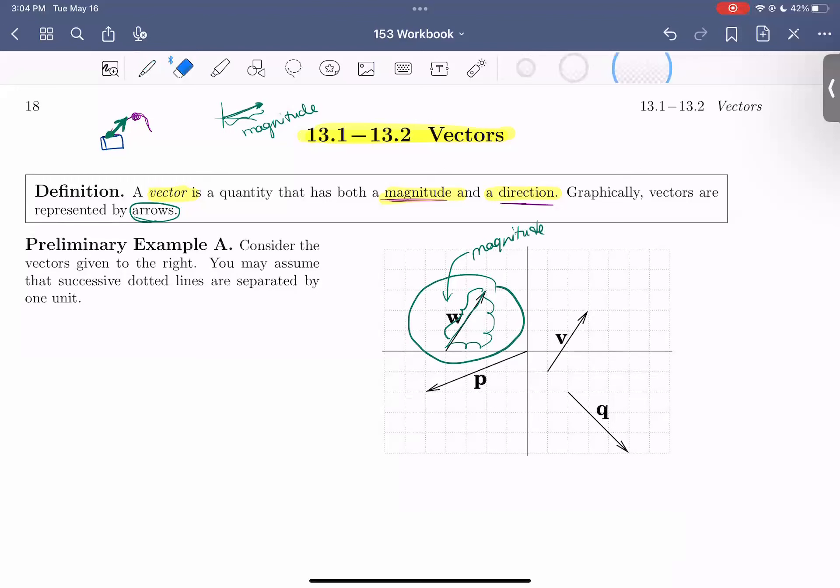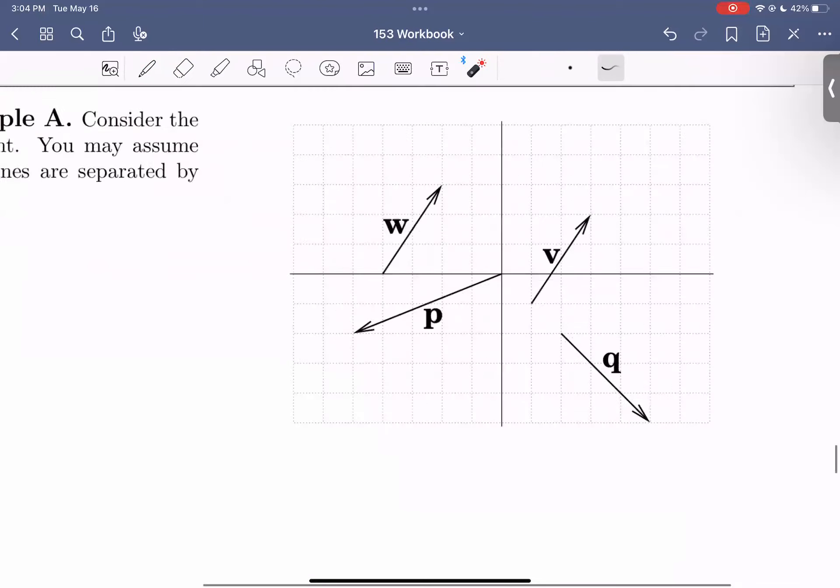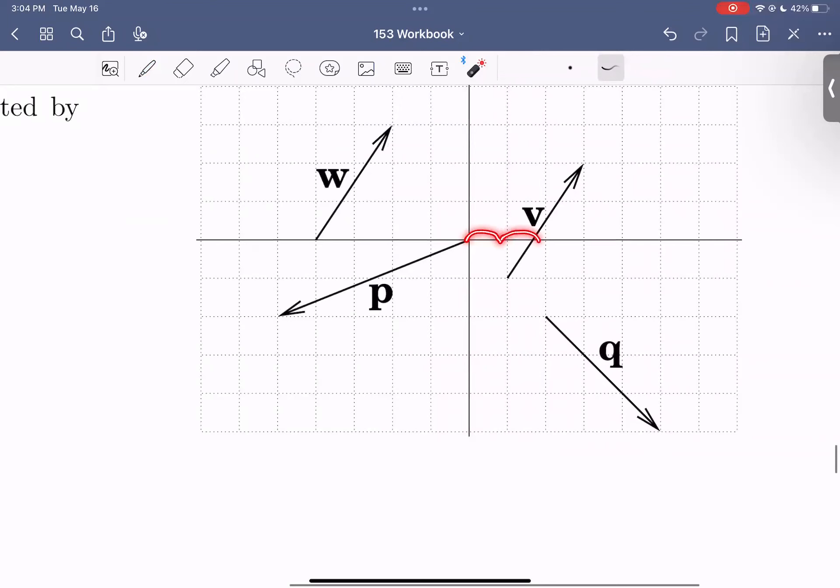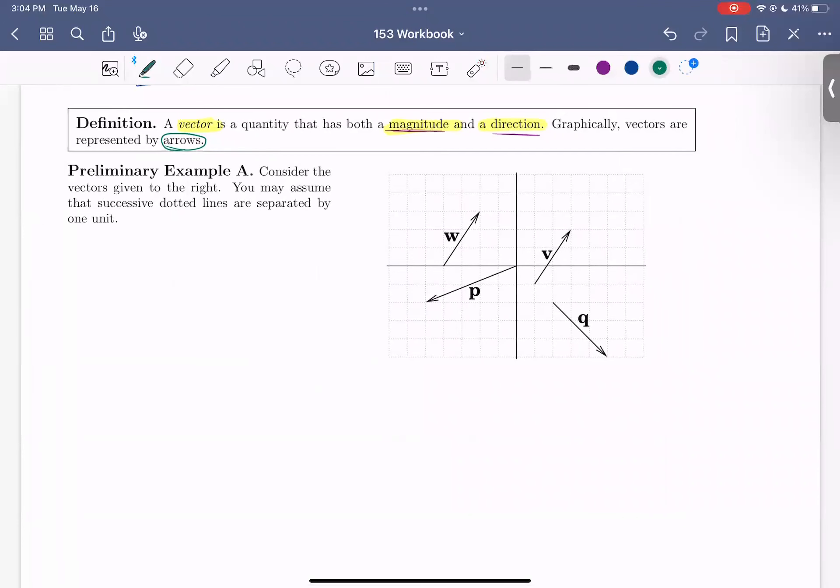OK, cool. So let's get started with this preliminary example A. So here we're told to consider the vectors given to the right. You may assume that successive dotted lines are separated by one unit, meaning that each of these boxes here are representing one unit. So let's make some observations about what we see in this graph.